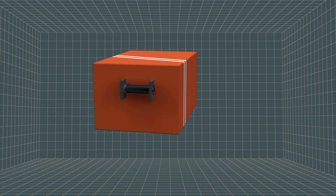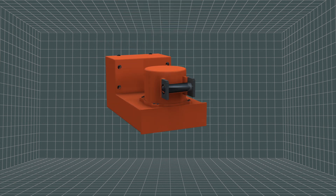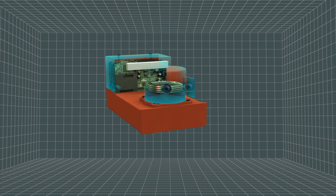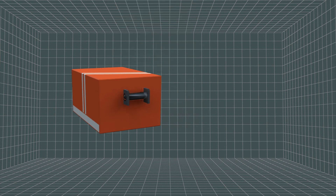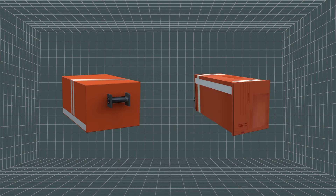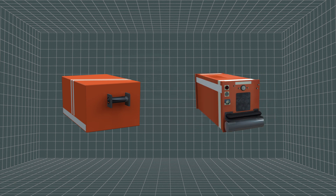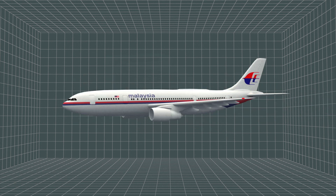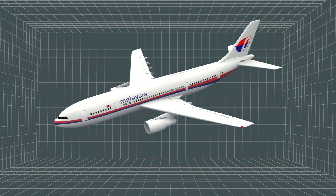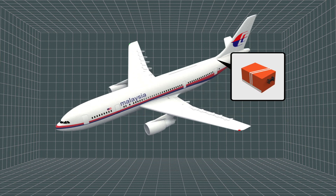In every commercial aircraft, there are two black boxes: a flight data recorder, which comprises a memory unit, memory boards, and an underwater locator beacon, and a cockpit voice recorder. Both are located in the rear of the aircraft to offer maximum protection in the event of a crash.